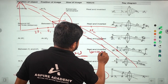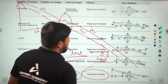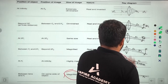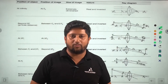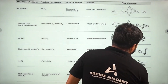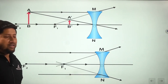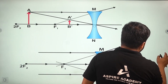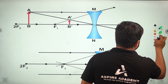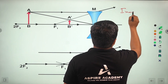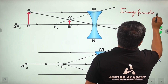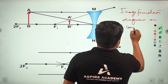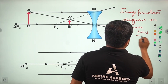So these are all the image formation diagrams for a convex lens, also called a converging lens. This completes the image formation in a convex lens.